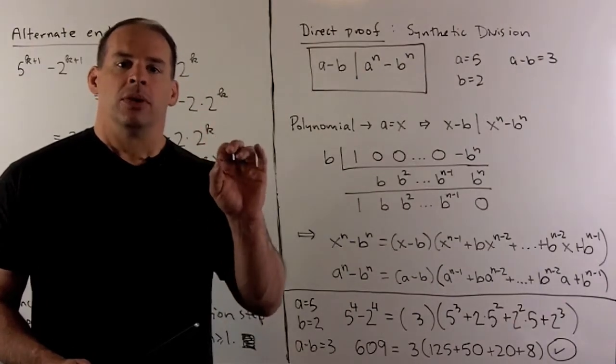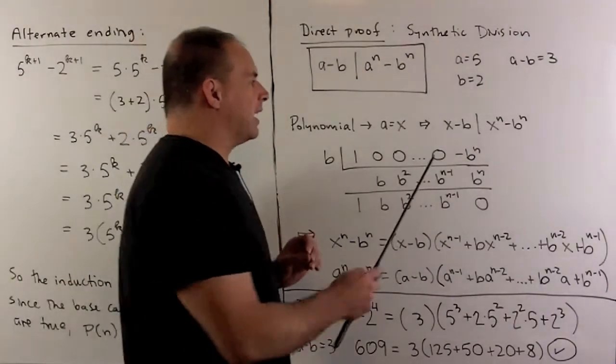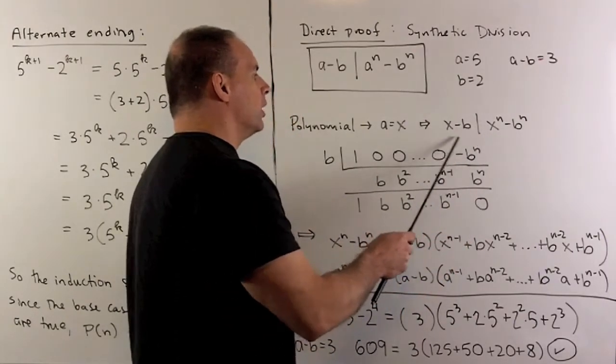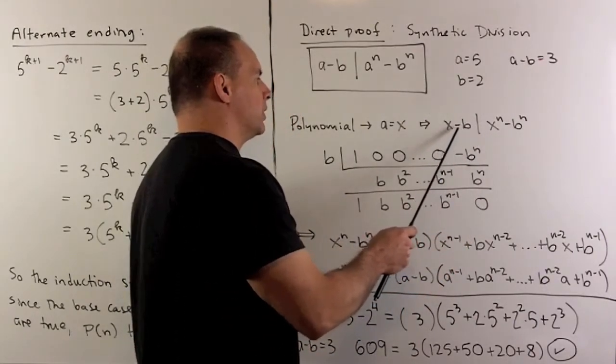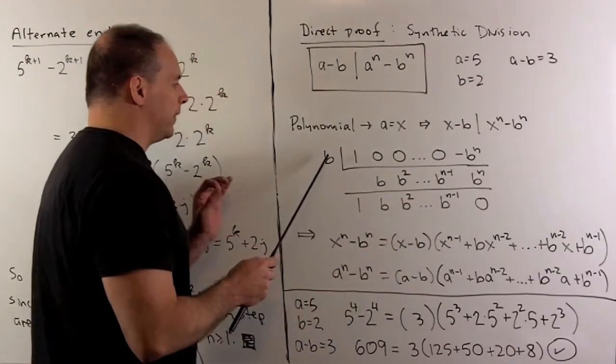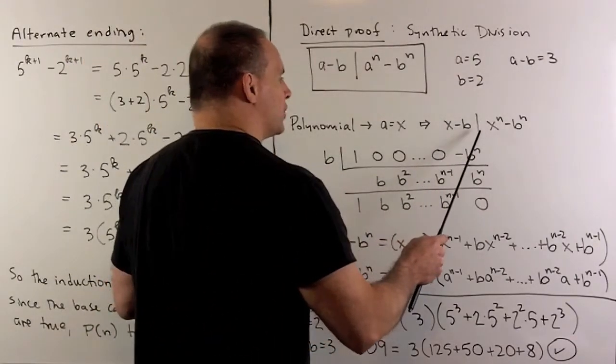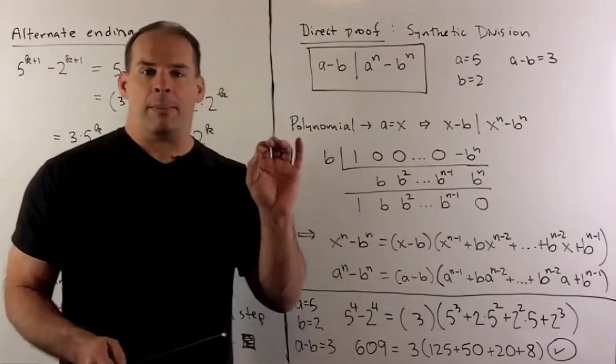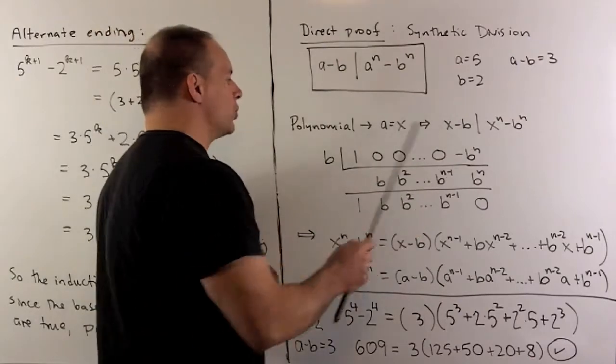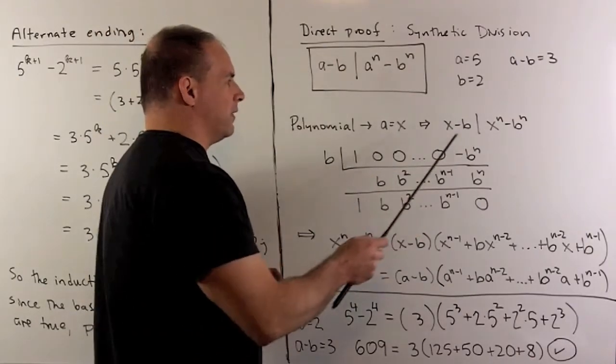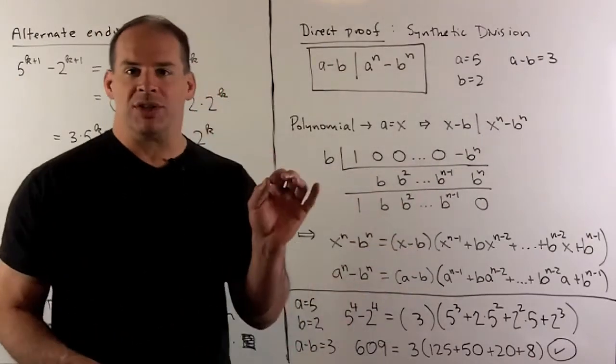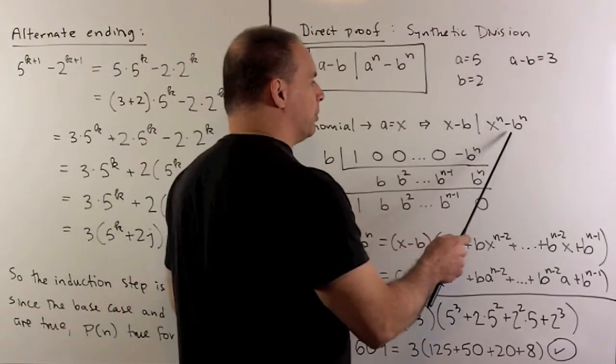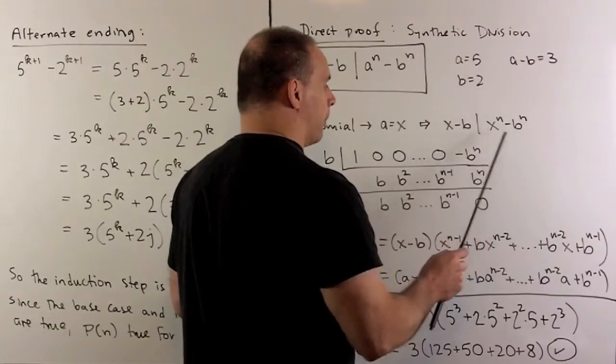For synthetic division, the way I would set this up, if I wanted to divide x minus b into x to the n minus b to the n, our root is going to be b. We take off the minus sign, put that here. Then, we're going to peel off all the coefficients of this polynomial, starting with x to the n, and then working our way down by degree. So the coefficient here is a 1. We don't have anything for x to the n minus 1, x to the n minus 2, and so on. So we have all zeros until we get to our constant term, which is minus b to the n. So this we're just going to think of as a number.